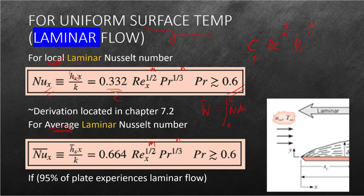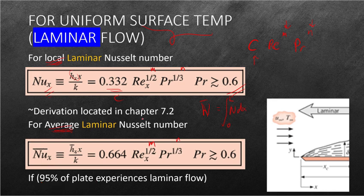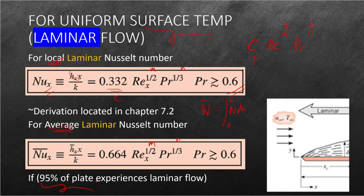So this is also applicable to plates who experience the critical flow at the end points, or in other terms, it can be called as if 95% of the plate experiences laminar flow. So if majority is laminar, then there is also no need to compute for the turbulent Nusselt number.